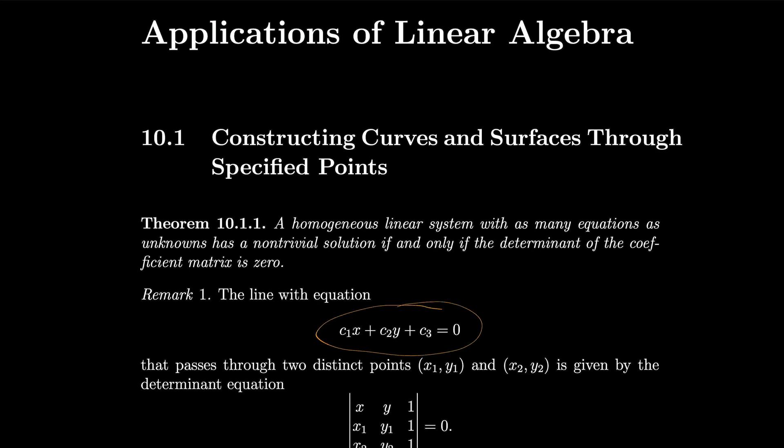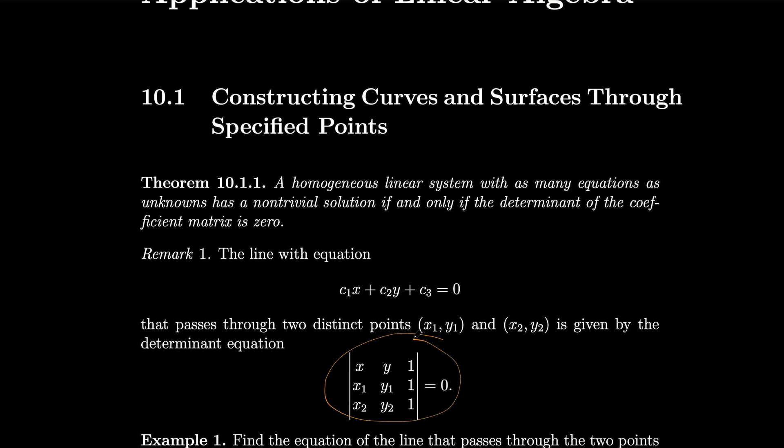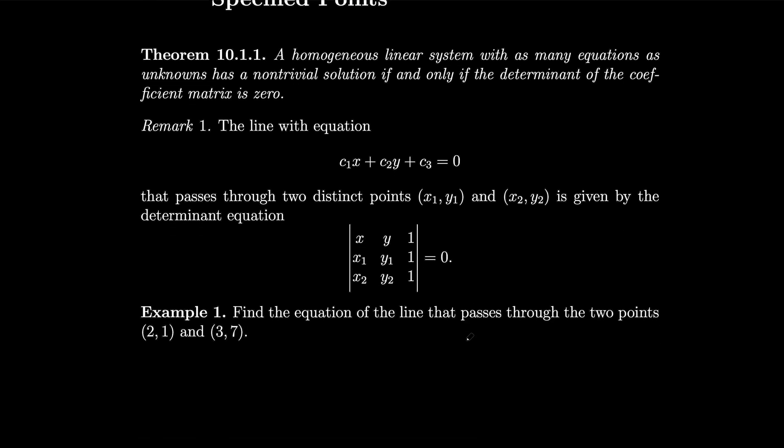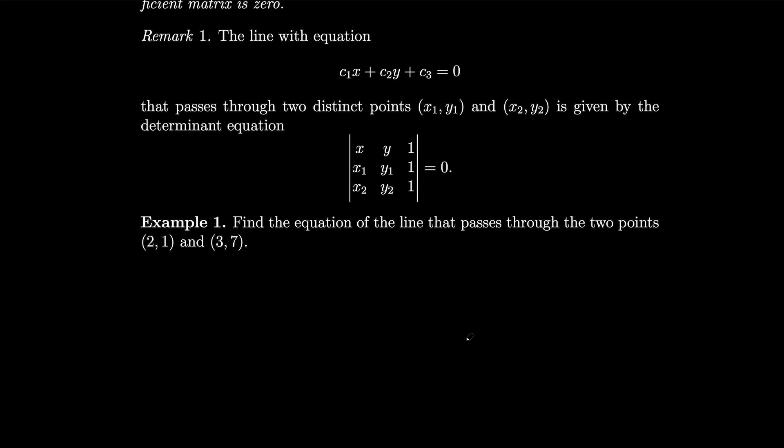The line with the equation c1x plus c2y plus c3 equals 0 that passes through two distinct points, x1y1 and x2y2, is given by this determinant equation. Because if it is equal to 0 and we have that c1 and c2 and c3 are not all 0, then in order for this thing to pass through the points and have a non-trivial solution, the determinant of this coefficient matrix must be 0 and therefore right over there we have the equation of that line. So what we can do is we can use that to find, for example, the equation of the line that passes through these two points right over here.